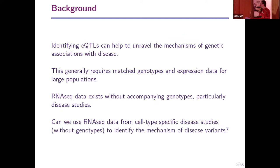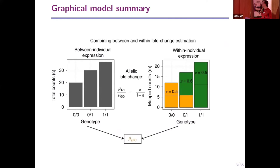Identifying eQTLs — genetic loci associated with different levels of gene expression — can help unravel the mechanisms of genetic associations with disease, but this generally requires matched genotypes and expression data for relatively large populations. There's a lot of RNA-seq data that exists without accompanying genotypes, particularly in disease studies looking at specific cell types or tissues. We would like to use this RNA-seq data from cell-type-specific disease studies to identify the mechanisms of disease variants and unravel molecular etiology.